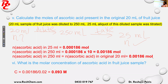Remember: when you do a dilution, the moles are not changing, but the concentration will drop. Next question: what is the molar concentration of ascorbic acid in the fruit juice sample? C equals N over V. The moles are 0.00186, and they are in 20 ml — which is 0.02 liters. Therefore, this gives you the concentration. This is how you find the original concentration.